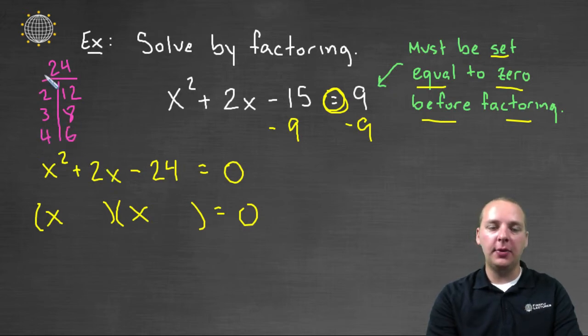4 times 6, that multiplies to 24. And if the signs were just right, it could give me a 2. You can combine 4 and 6 to give you a 2 if the signs were right. So let's go that route. We'll have a 4 and a 6.